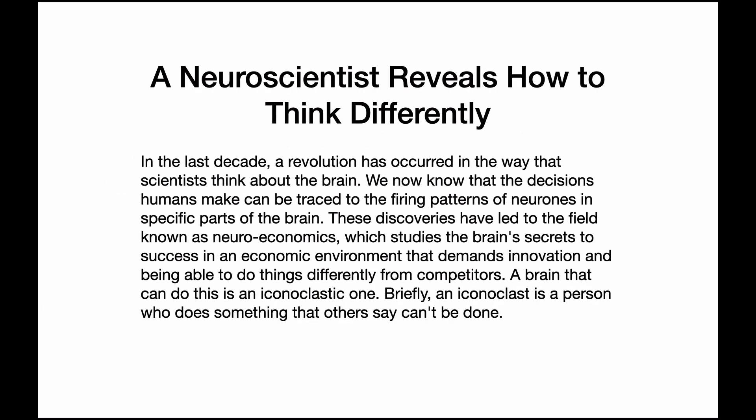A Neuroscientist Reveals How to Think Differently. In the last decade, a revolution has occurred in the way that scientists think about the brain. We now know that the decisions humans make can be traced to the firing patterns of neurons in specific parts of the brain. These discoveries have led to the field known as neuroeconomics, which studies the brain's secrets to success in an economic environment that demands innovation and being able to do things differently from competitors. A brain that can do this is an iconoclastic one.